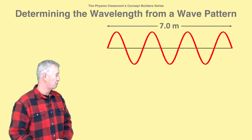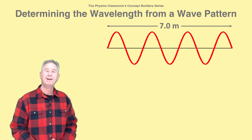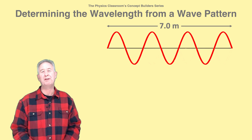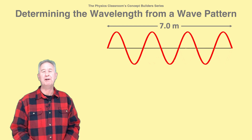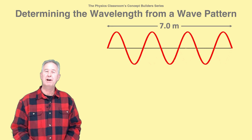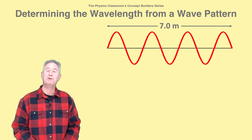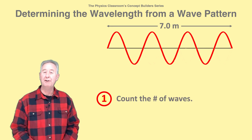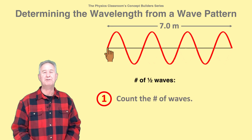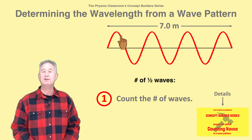Here's a diagram of a wave in a rope. You know the length of the rope. How do you calculate the wavelength? The process involves three steps. First, count the number of waves in the rope.